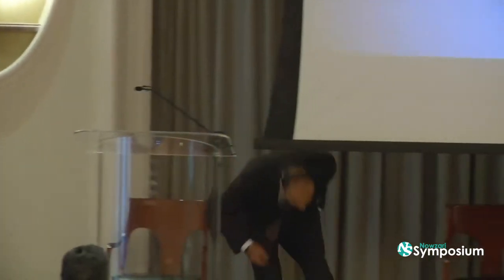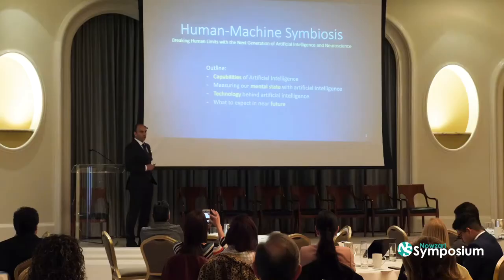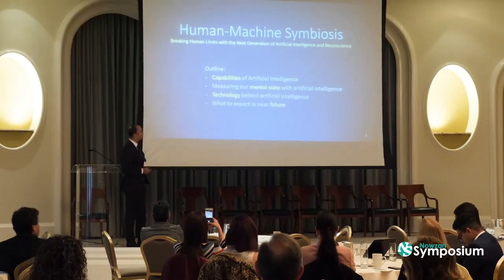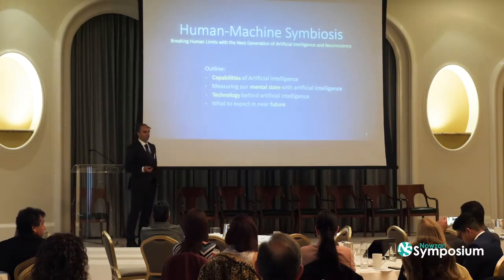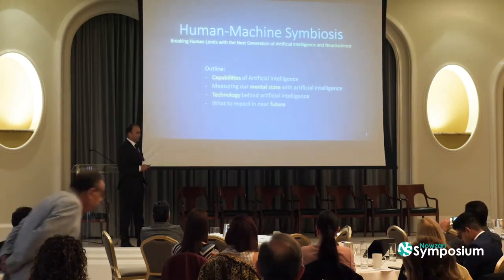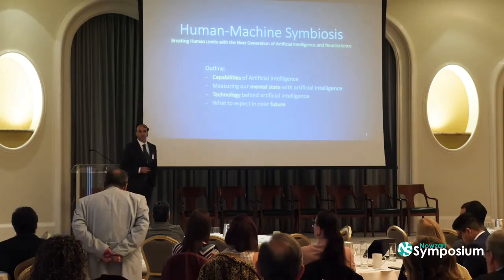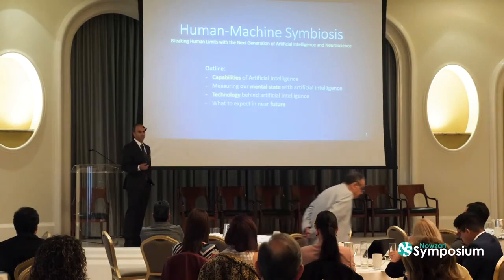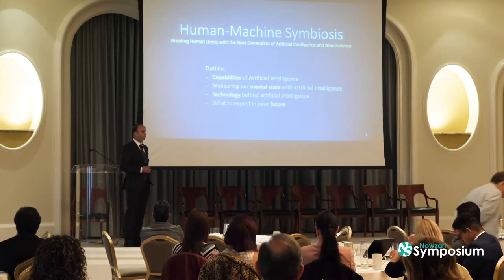The outline of my talk is going to be: first, I'll show you some capabilities of AI and the status of AI as of 2019. Then I'll talk about some measuring methods that we use for measuring mental states using artificial intelligence. Then I'll take a deeper dive into the technology behind artificial intelligence. And finally, I'll leave you with some direction as to where we are heading in the near future.